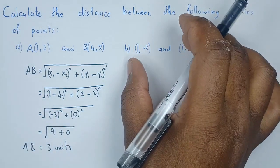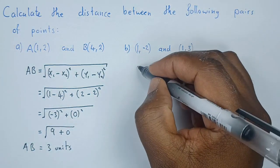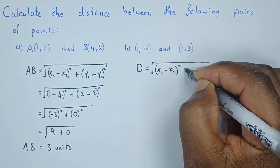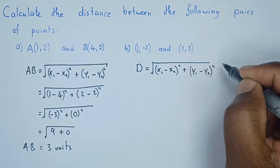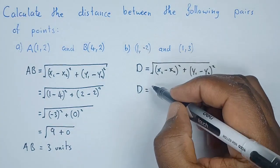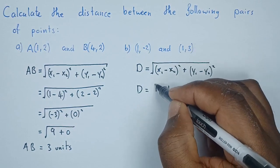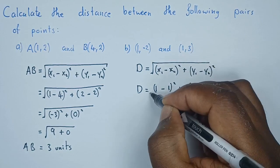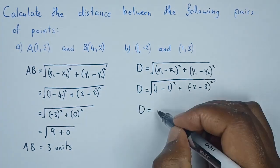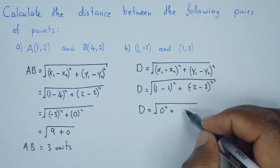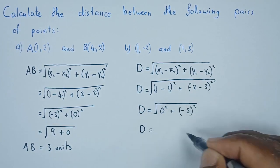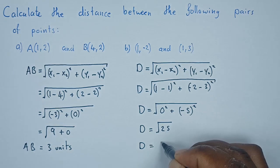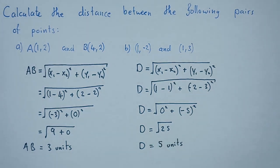Find the distance on this one as well — the idea is the same. Since we have these two points, the distance is given by the square root of (x1 minus x2) squared plus (y1 minus y2) squared. So the distance equals the square root of (1 minus 1) squared plus (negative 2 minus 3) squared. That gives us 0 squared plus negative 5 squared, which is 25, and the distance is 5 units.